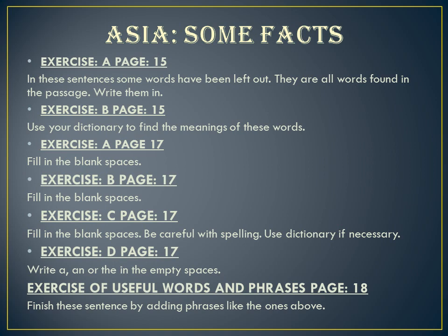Exercise D on page number 17 requires you to write 'a,' 'an,' or 'the' in the empty sentences. These words are called articles. When you want to specify something, you add the article 'the.' When it is a vowel and singular noun, you add 'an,' and when it is a consonant and singular noun you use 'a.' There is also an exercise on useful words and phrases on page number 18, where you finish the sentences by adding phrases like the ones given above the exercise.